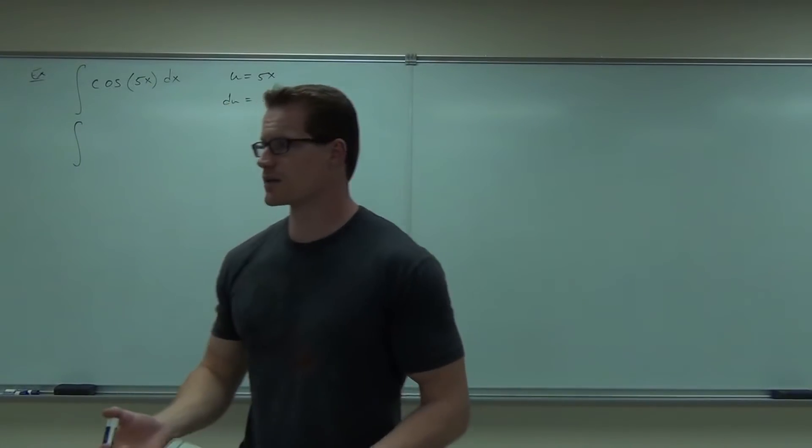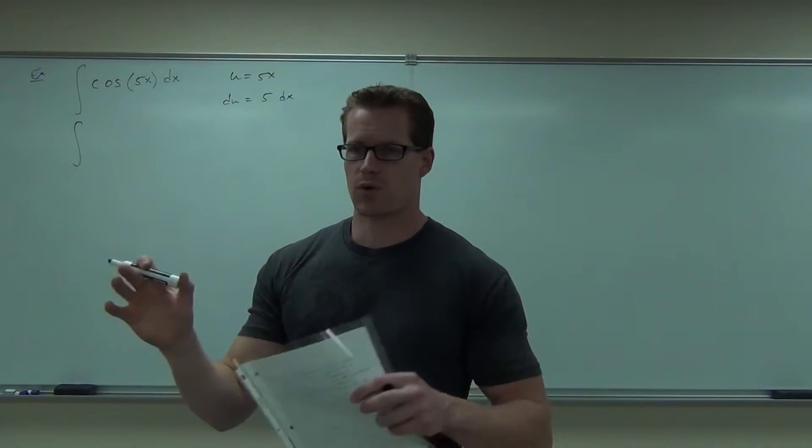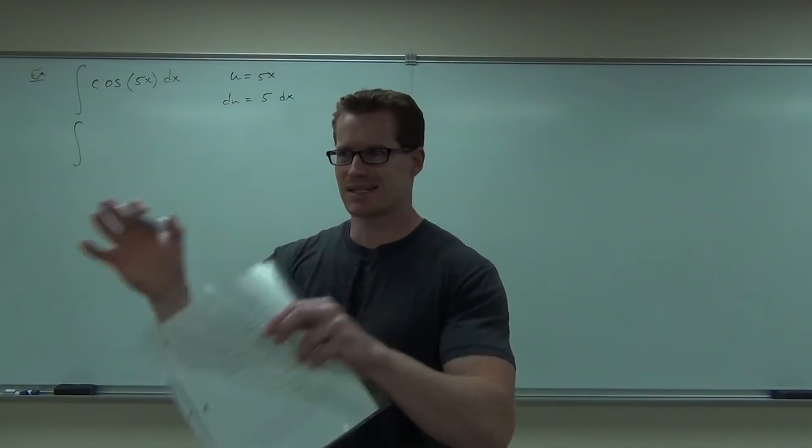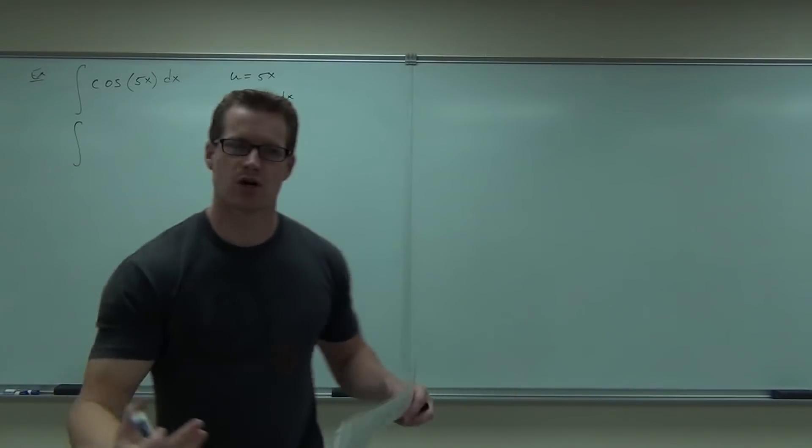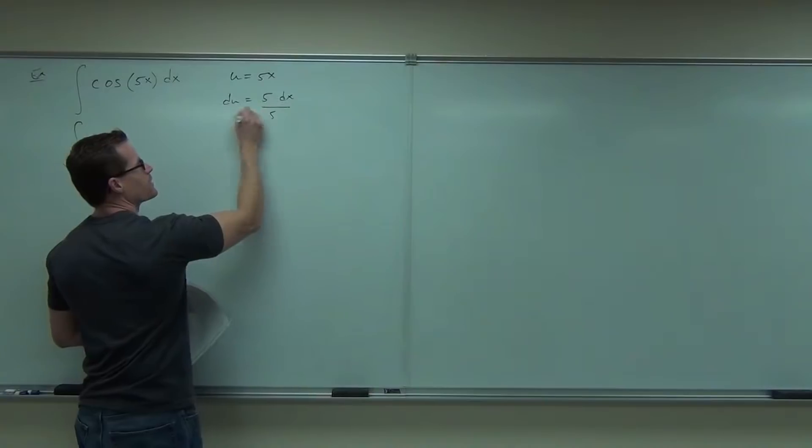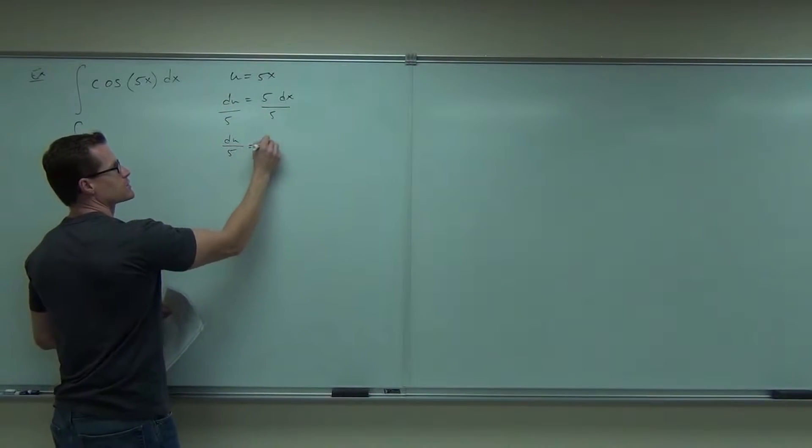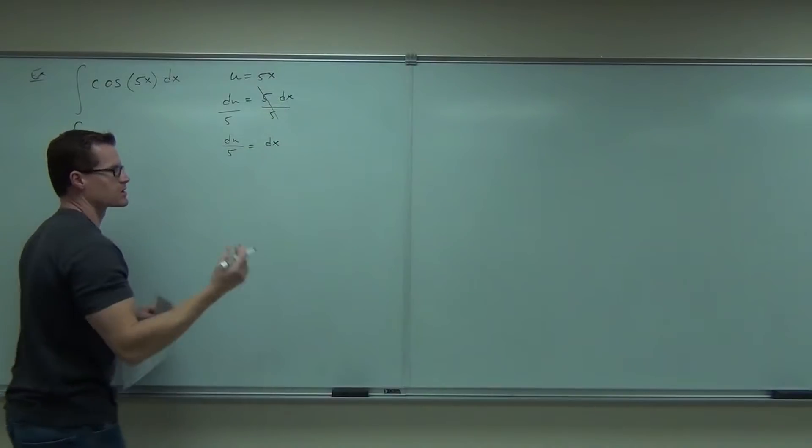Some people do this differently. Some people don't solve for dx. Some people try to substitute in for du. I prefer solving for dx. It just makes it a little bit easier for us. So if we divide both sides by 5, we have du over 5 equals dx.